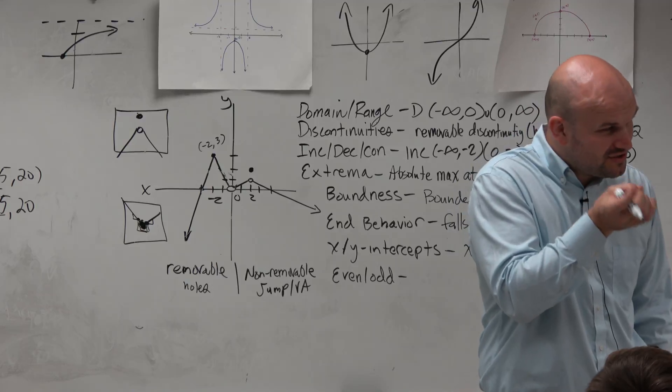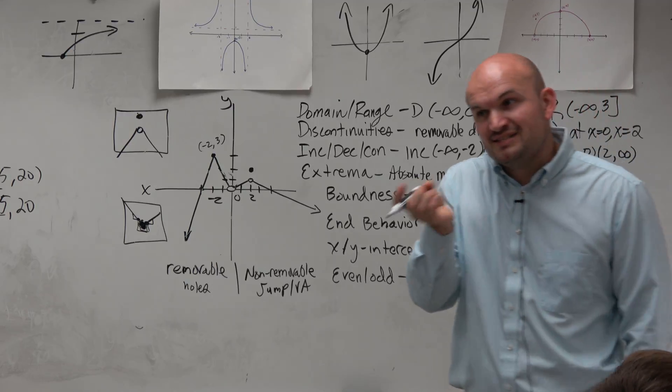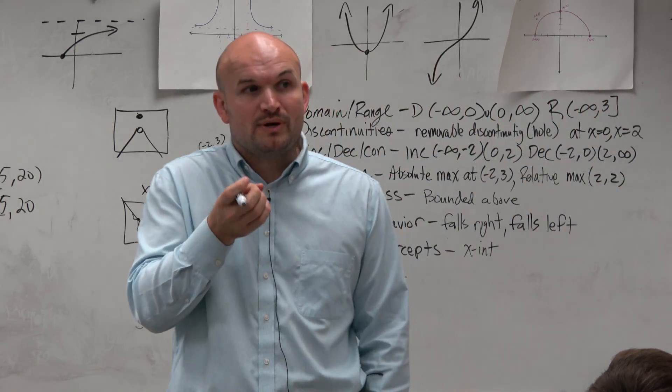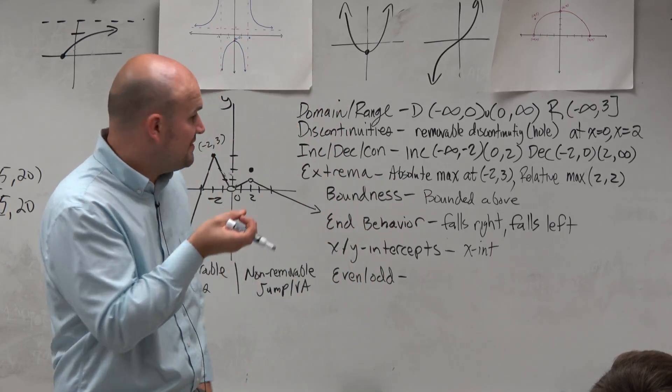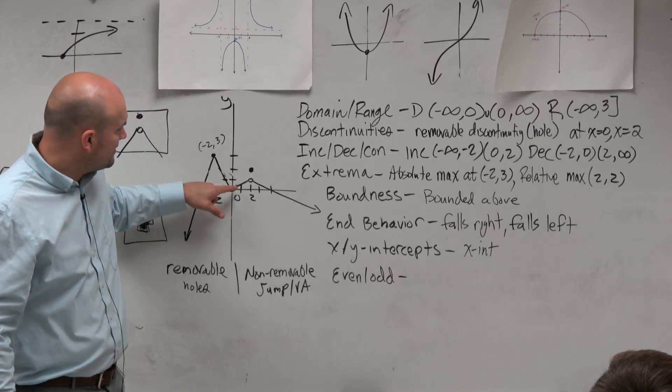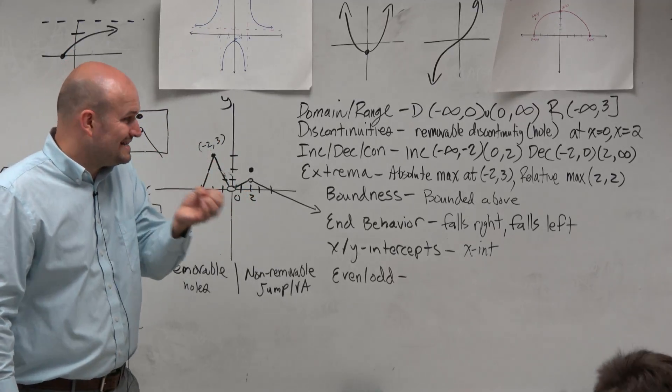But it's also important for us to use some vocabulary here. Remember that these x-intercepts are a lot of times what we call the solutions to the equation. They're the values or the zeros of the equation. They're the values that make the equation true when y is equal to 0.